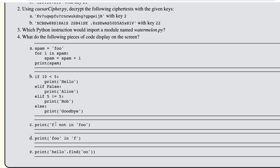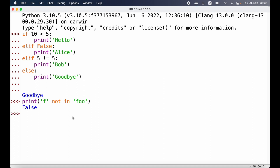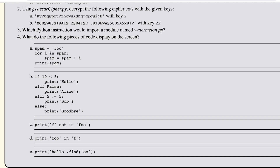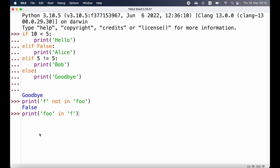Next up we have a print statement with the expression 'f' not in 'foo'. The not in keywords evaluate whether the string 'f' is contained in 'foo'. We know that 'f' is indeed the first character inside of 'foo', so 'f' not in 'foo' should evaluate to false. Let's verify that in our interactive shell — and as we press enter, we can indeed see false displayed.